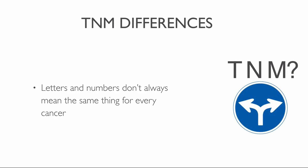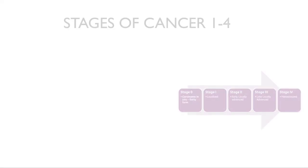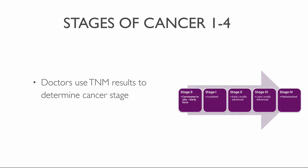For example, in some types of cancer, the T categories describe the size of the main tumor. In others, they represent how deep the tumor has grown into the organ it started in, or whether the tumor has grown into nearby structures. Doctors combine the TNM results to determine the stages of cancer — one to four — for each person.